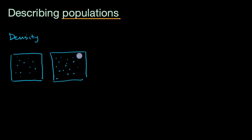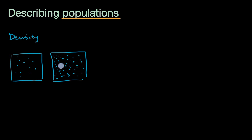In general, density is just the number of individuals of that species you have in a given unit of area in that general geography. So this would be a high density, this would be a low density, if we're looking at the land from above.